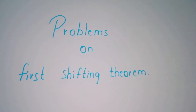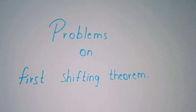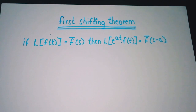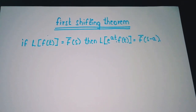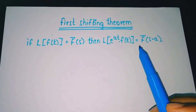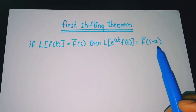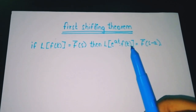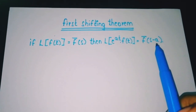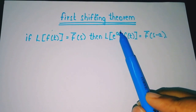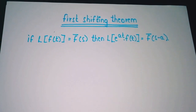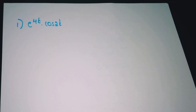Hi friends, welcome back to my channel. Today we are going to discuss problems on the first shifting theorem. The formula states: if Laplace of f(t) is F̄(s), then Laplace of e^(at)·f(t) = F̄(s−a). That means wherever we have e^(at) multiplied by f(t), we replace s with s−a in the result. For e^(+at) we replace s with s−a, and for e^(−at) we replace s with s+a.